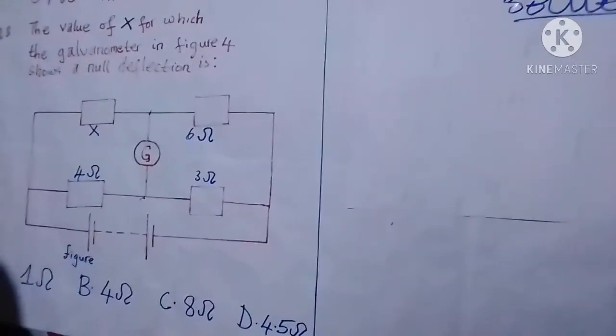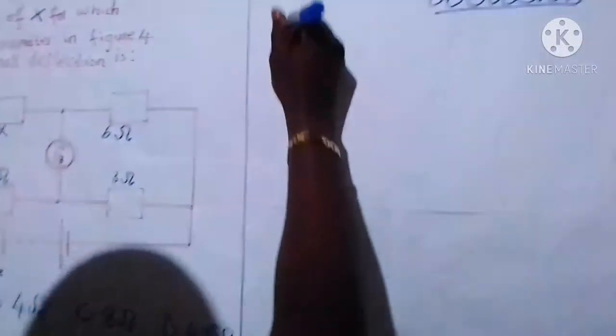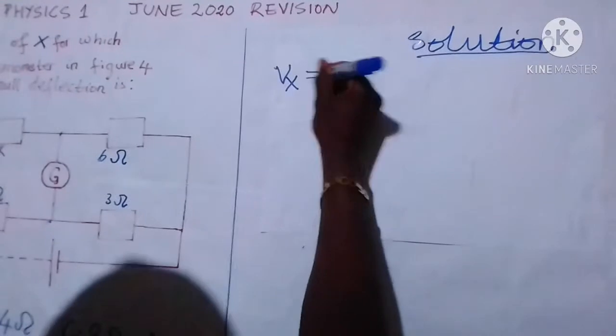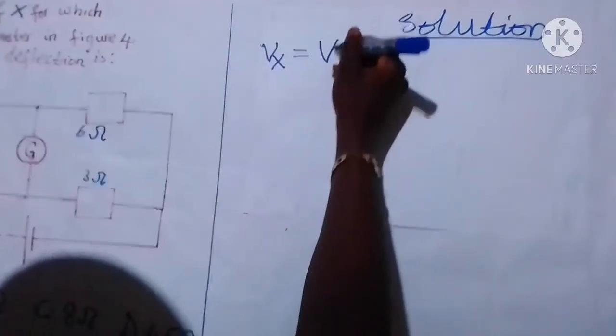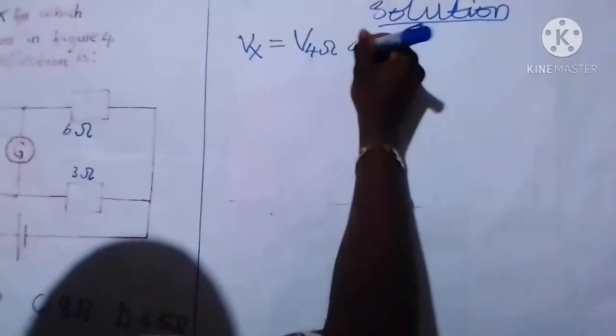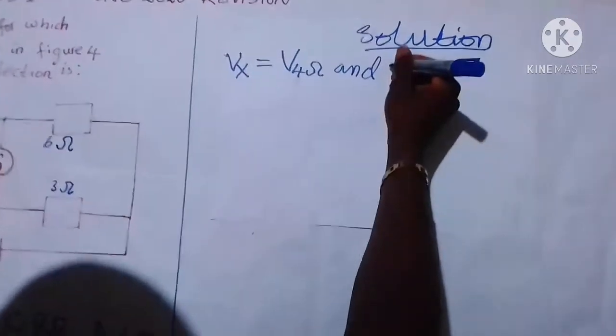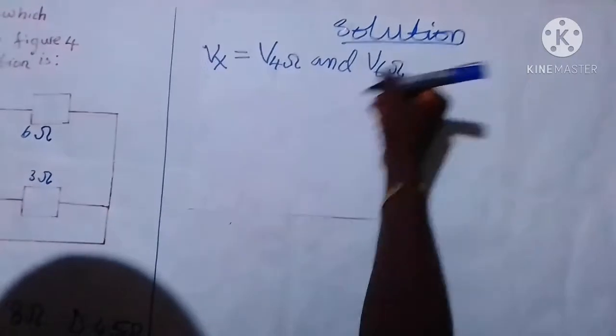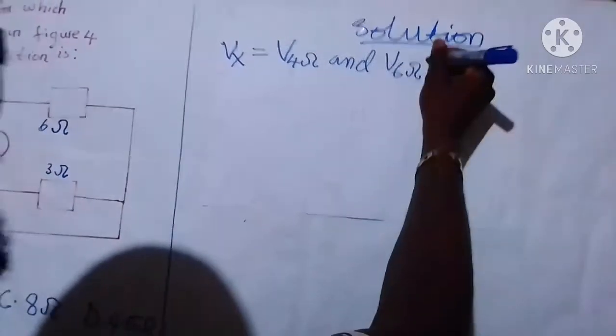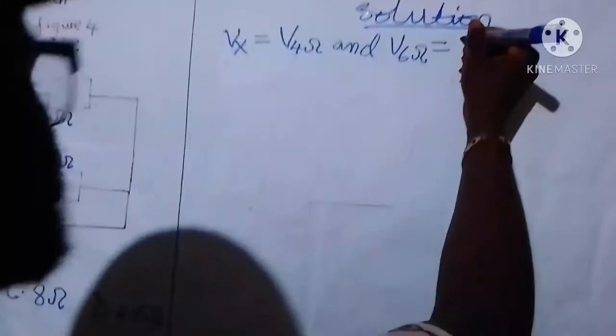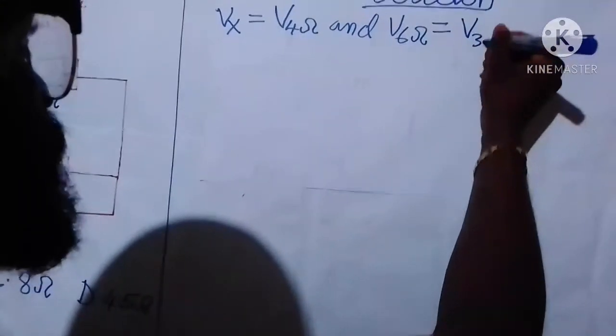If these two points are at the same potential, then the potential of X will be equal to the potential of 4 ohms, and the potential of the 6 ohms resistor will be equal to the potential of the 3 ohms resistor.